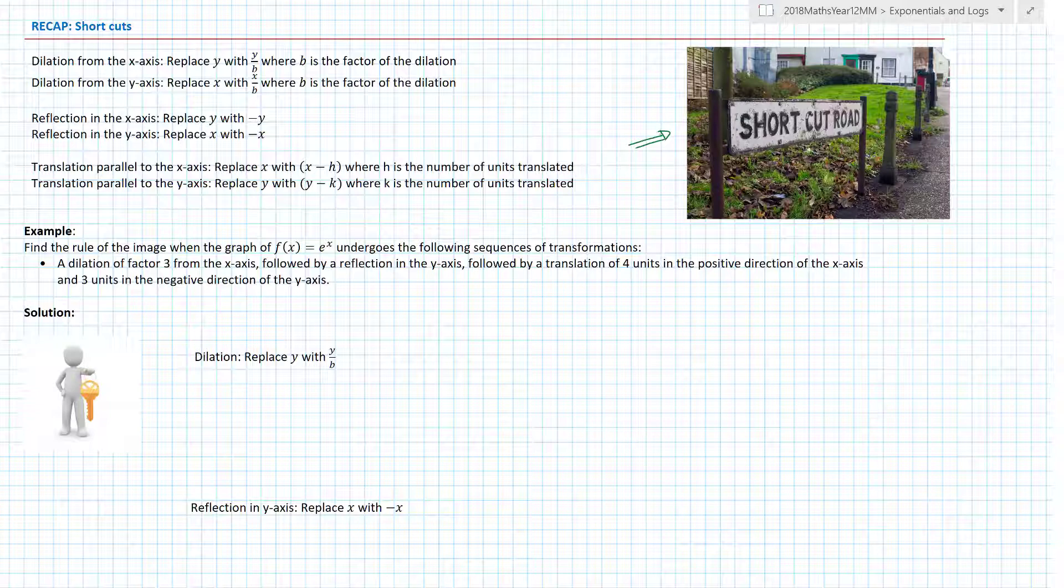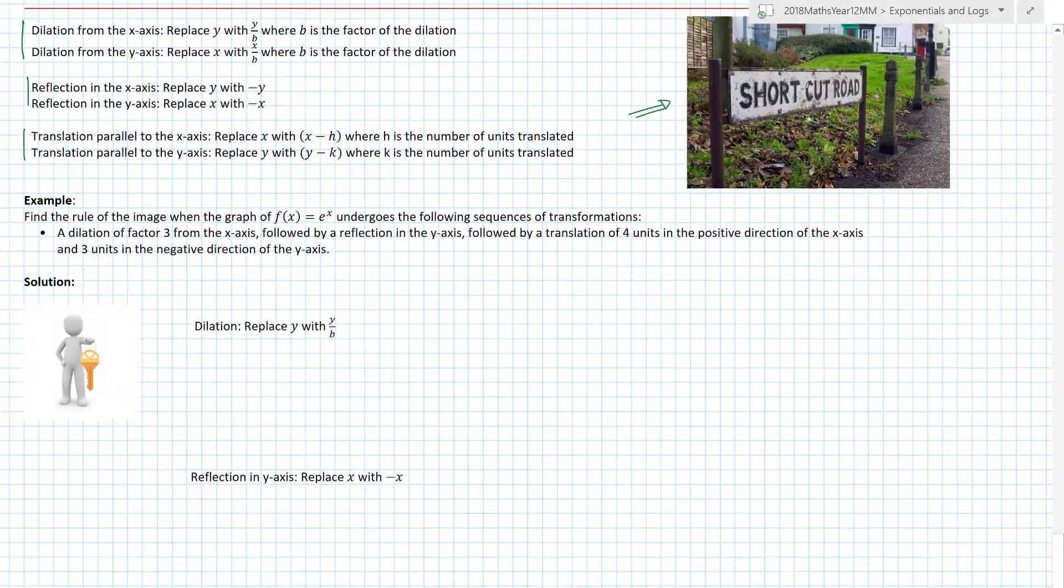So shortcuts: dilations, reflections, translations. Really, really important for you to remember how to do this. This is - and we haven't done a lot of practice on this really, barring at the start of the year when we actually started doing all this stuff - but here's an example.